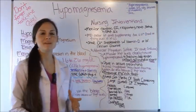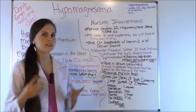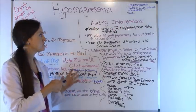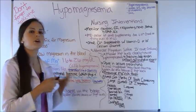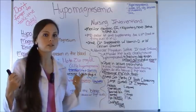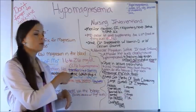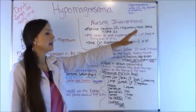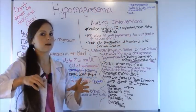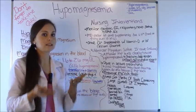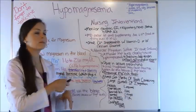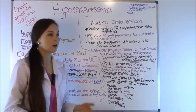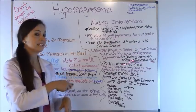For nursing interventions — a big section that tests love to ask about — first, you want to monitor their cardiac, GI, respiratory, and neuro status. Put them on a cardiac monitor and monitor for any EKG changes discussed earlier. The doctor may order potassium oral supplements due to the low potassium levels, because it's hard to get magnesium levels up if calcium levels are also low — you want to do a balancing act and get them both up together. The doctor may also order calcium supplements with vitamin D or 10% calcium gluconate if calcium levels are low.